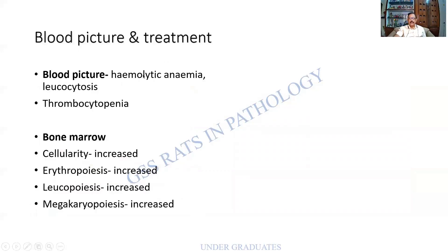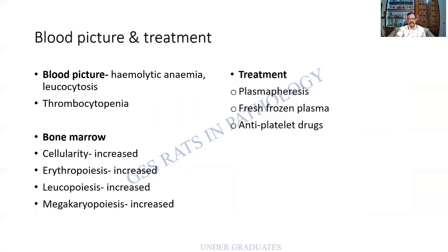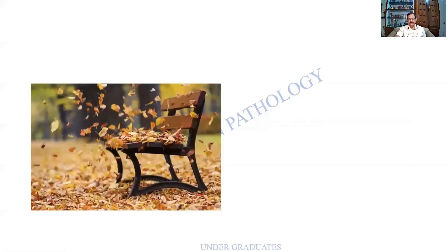The blood picture in TTP shows hemolytic anemia and thrombocytopenia. In the bone marrow, cellularity is increased; erythropoiesis and megakaryopoiesis are both increased because there are no platelets in the peripheral blood. Treatment includes plasma rich in platelets, fresh frozen plasma, and anti-platelet drugs, sometimes because antibodies may be involved.